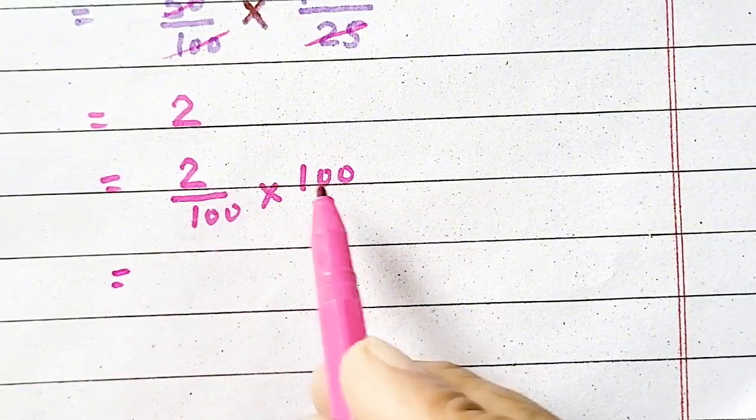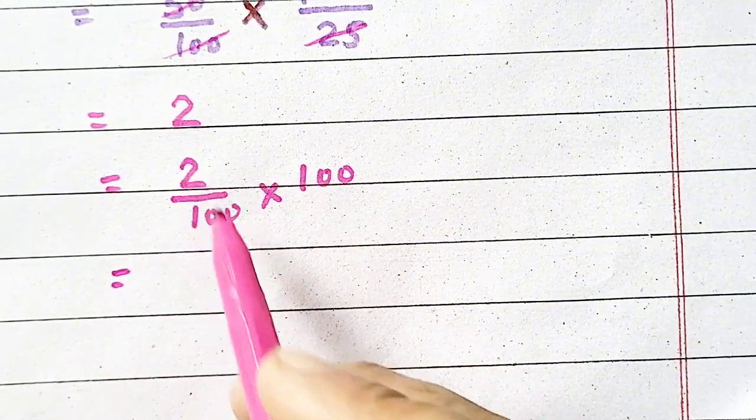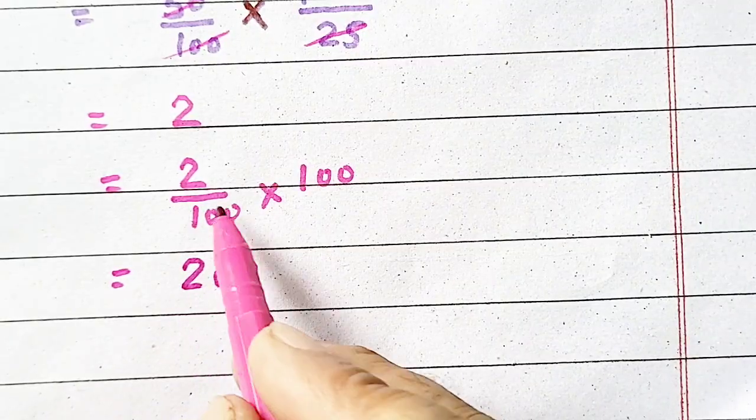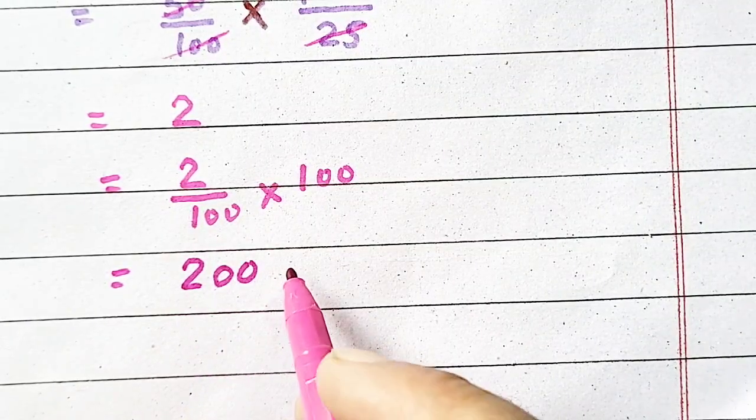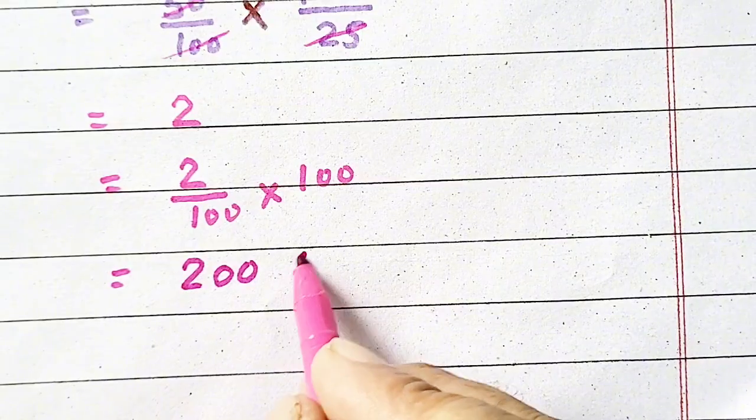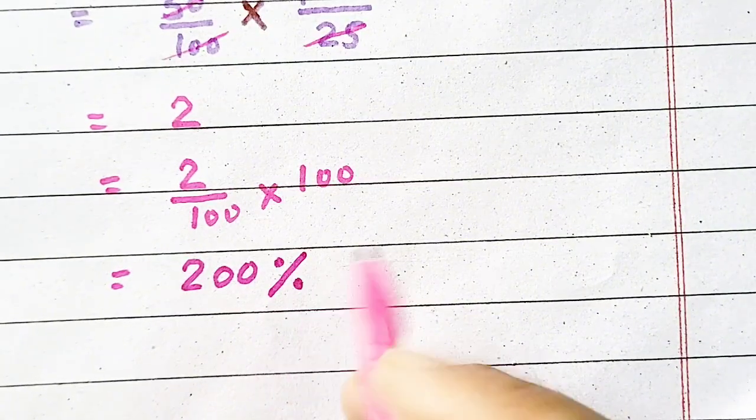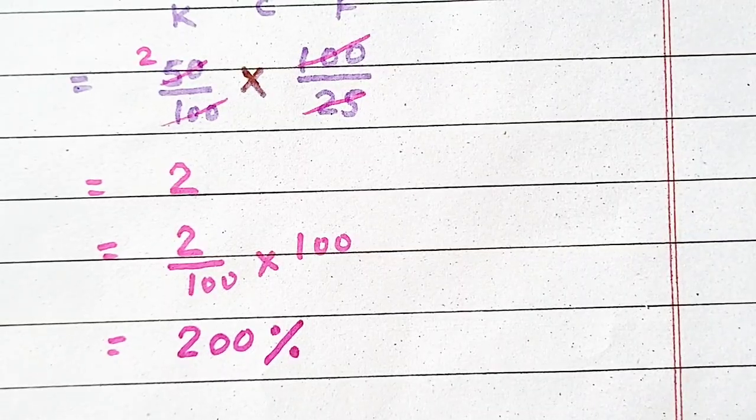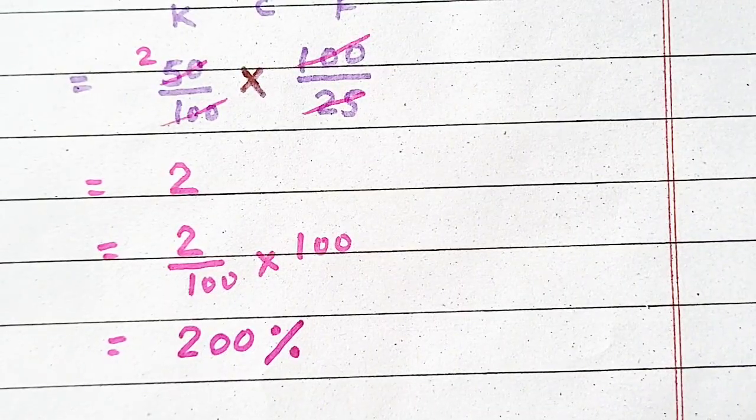Now, 100 multiplied by 2 will be 200, and 1 by 100 is percentage, so it will be 200 percent, which is your answer. Thank you.